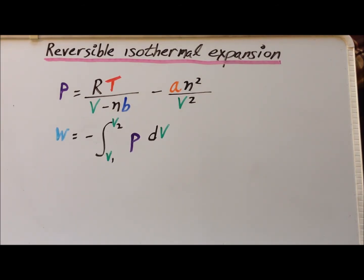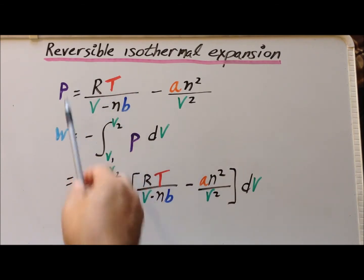The work, W, of reversible isothermal expansion is equal to minus the integral from V1 to V2 of P dV. Next, we simply substitute our expression for the pressure of a van der Waals gas into our integral to get minus the integral from V1 to V2 of our pressure expression dV.